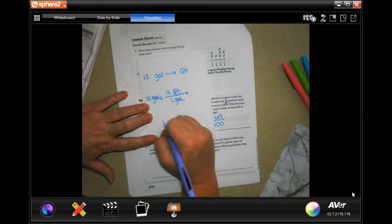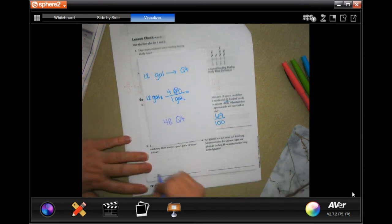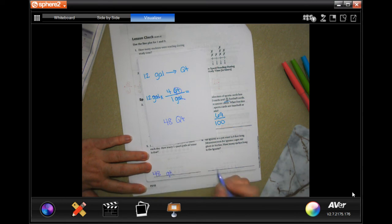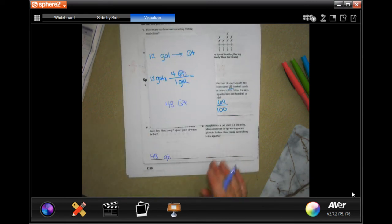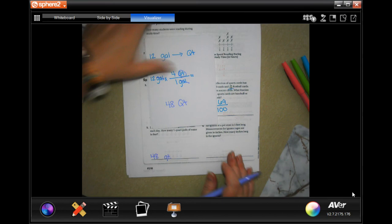And 12 times 4 is 48. 48 quarts. You can write one-quart pails if you want, 48 one-quart pails, but it's going to be 48 quarts.